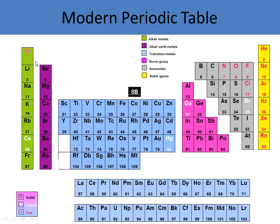Student: What's the difference between the families? Teacher: They have different properties — they bond in different ratios. Remember how some of them formed chlorides? These ones all form chlorides with one of each: one lithium, one chloride. These guys form ratios of two chlorides.